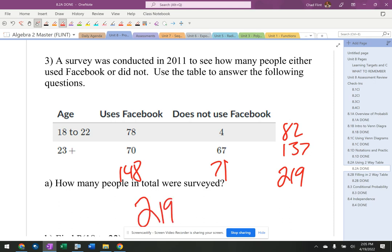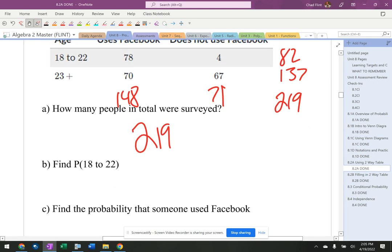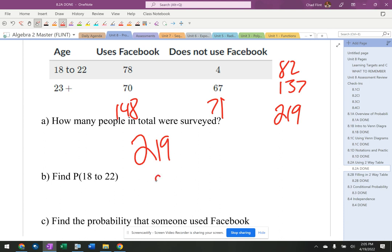So how many people were total surveyed? 219. Probability that they were 18 to 22: 82 of them were 18 to 22, 219 total.